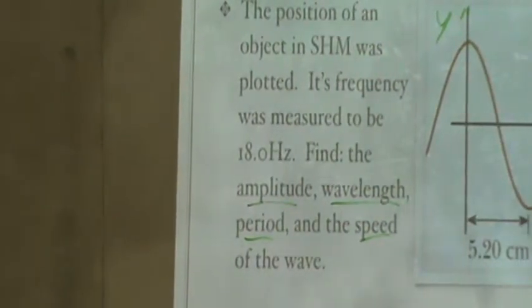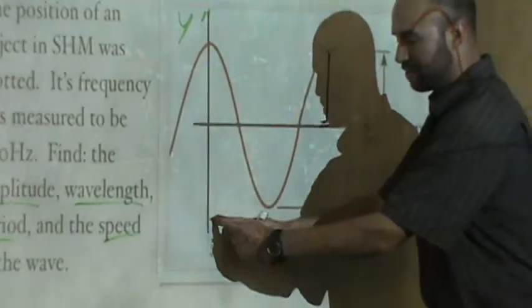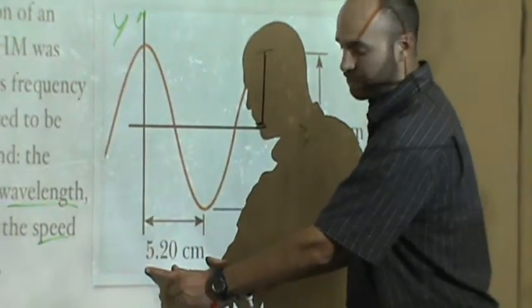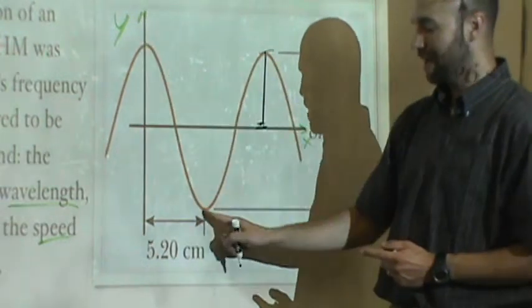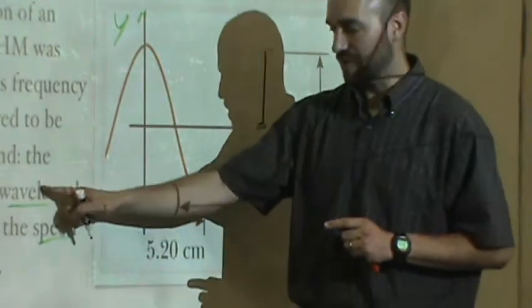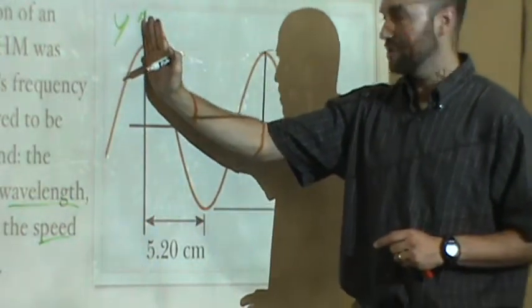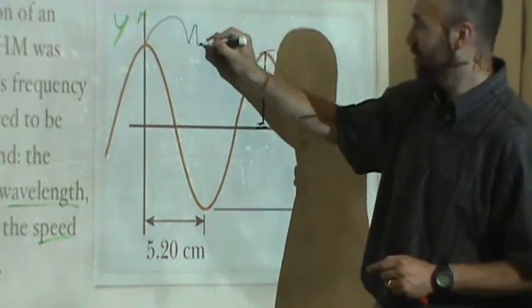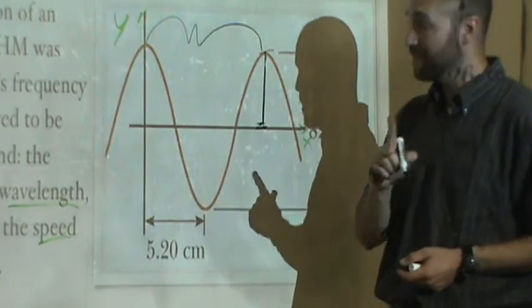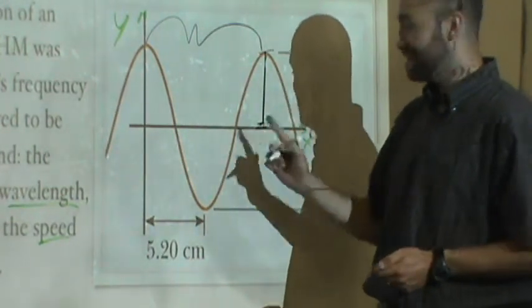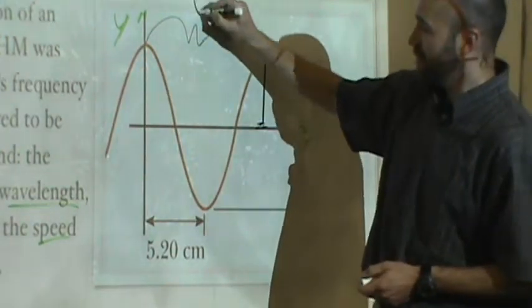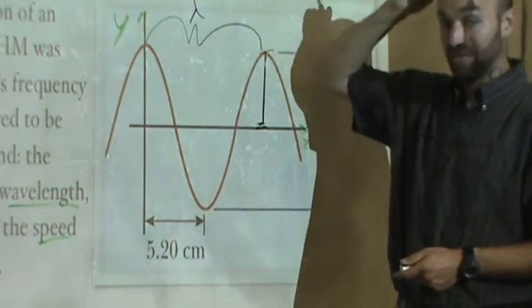The next thing it asks for is the wavelength. So we're going to look at our picture again. And we're going to notice that it gives us a measurement from the top to the bottom. And it tells us that distance is 5.2 centimeters. But notice, from the top to the bottom is not a complete cycle. Wavelength is the length from the beginning of one cycle to the beginning of the next cycle. So from here to here, this distance—not this time. The time would be the period. But the distance, remember, this axis is measured in position.